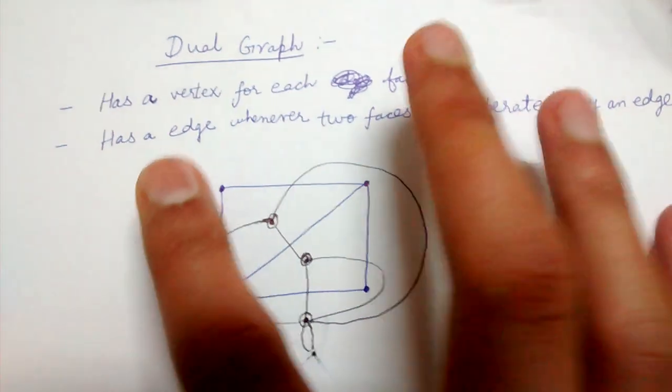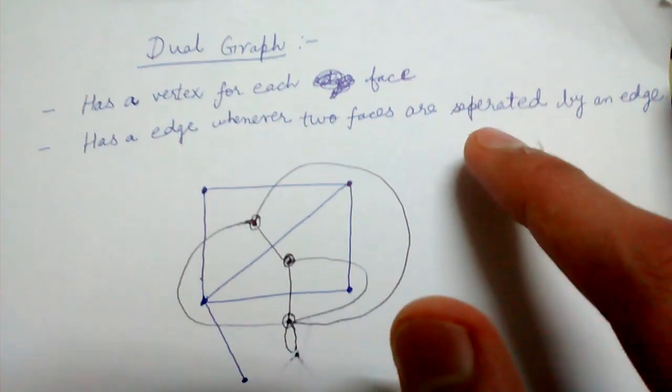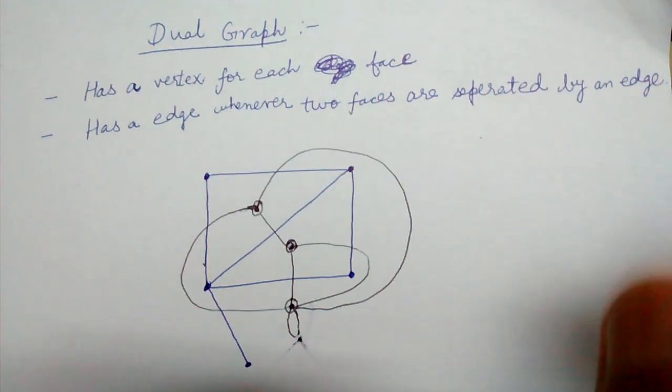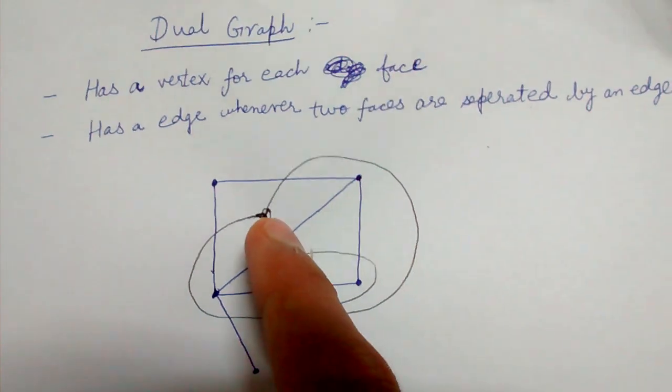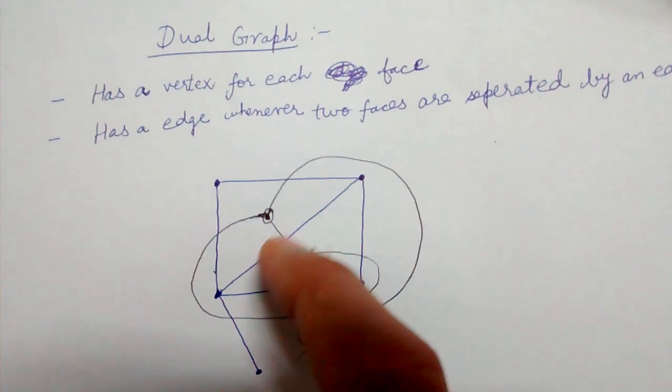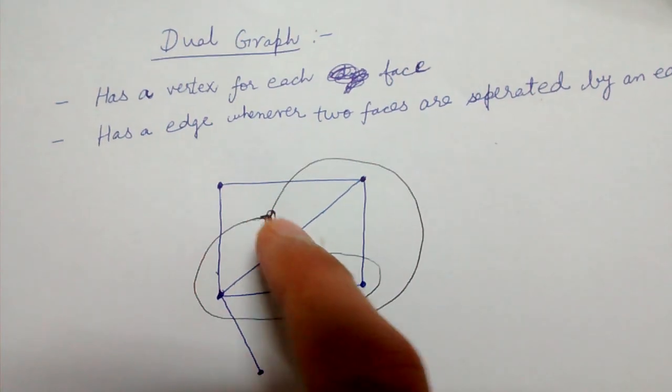The next rule is: it has an edge whenever two faces are separated by an edge. So we see that this and this face are separated by this edge. So we draw this edge.